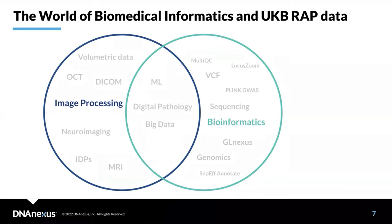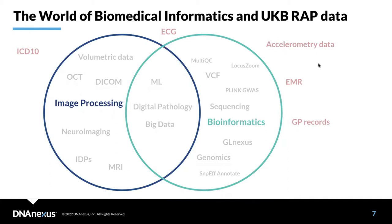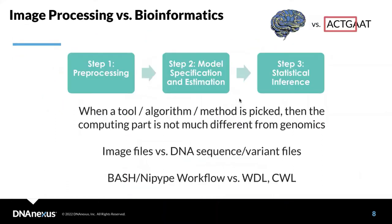Both bioinformatics and image processing fit into the world of biomedical informatics, which relates to many other file formats and signals — examples include electrocardiography, accelerometric data, or information about individual diseases in the form of ICD-10. So you can correlate your data to other phenotypes. Image processing and bioinformatics have significant overlap, but what are the main differences between them?